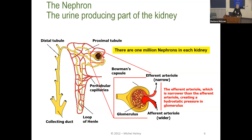With heart failure and poor arterial volume, the kidney's normal response will make the heart failure worse. Heart failure gets worse, kidney failure gets worse, kidney failure gets worse, heart failure gets worse. Now you've got lung failure from pulmonary edema, cerebral edema, and gastric edema with abdominal compartment syndrome — all because of the renin-angiotensin-aldosterone mechanism.